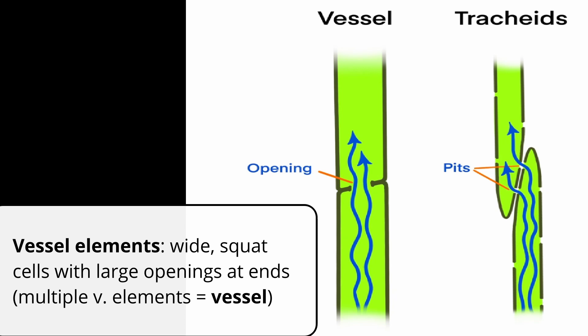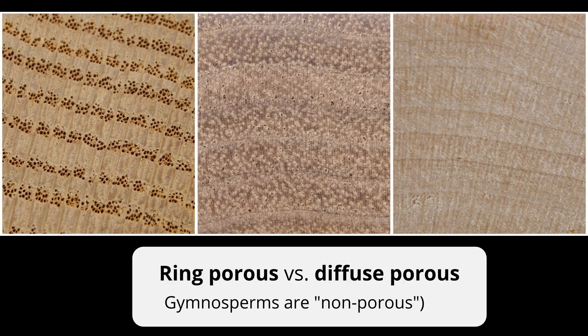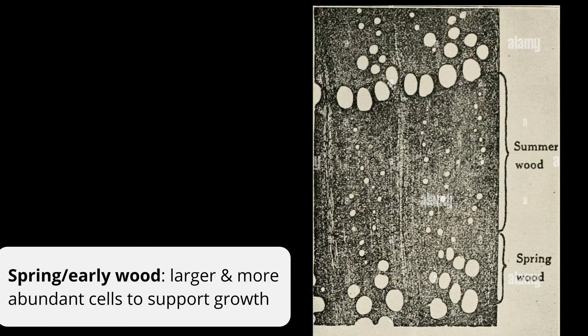We're going to talk about angiosperms and vessel arrangement now. Angiosperms can be described based on where their vessels are located in each annual ring. If you're a woodworker, you may have run into these terms before: ring porous and diffuse porous. When a tree starts growing in the season, it needs a lot more water and resources, so the cells tend to be bigger and more numerous, and you get what looks like a wider band of wood.